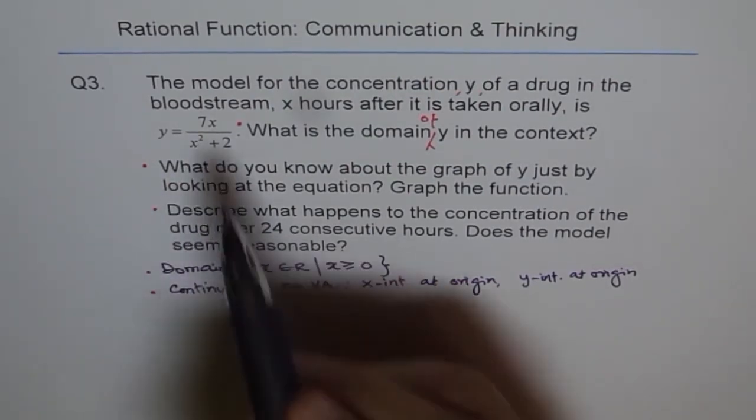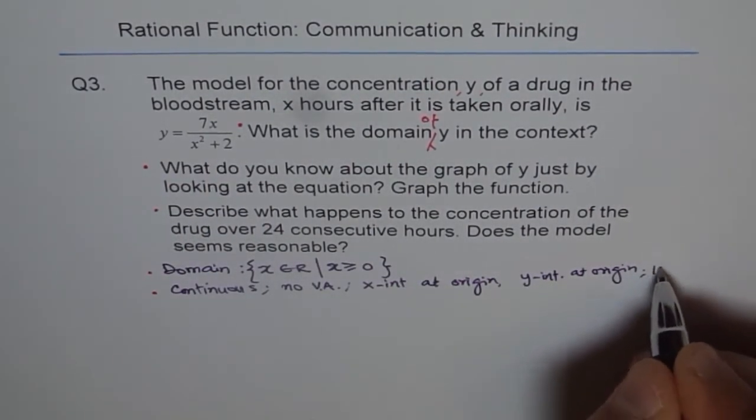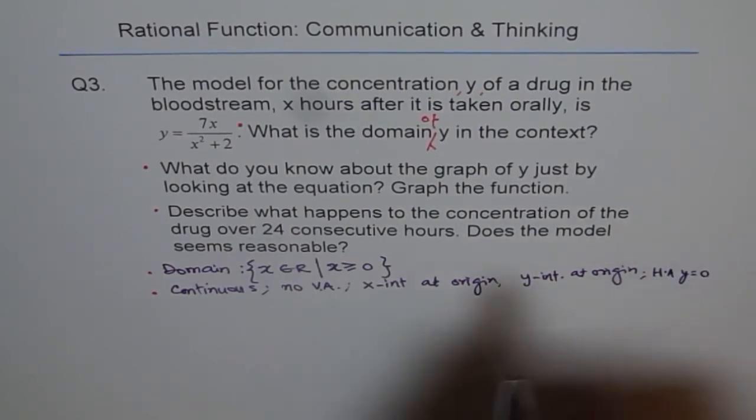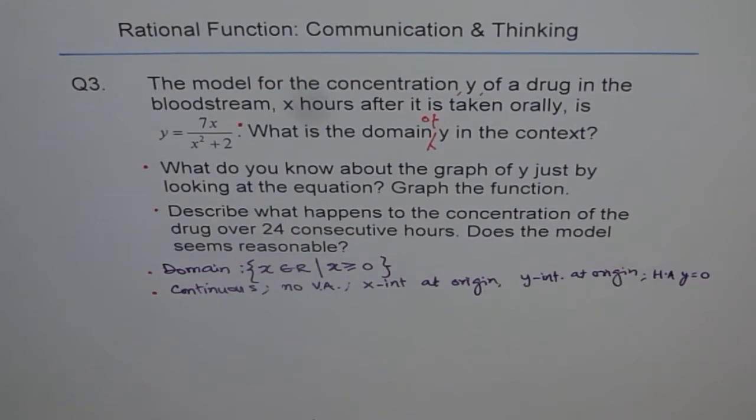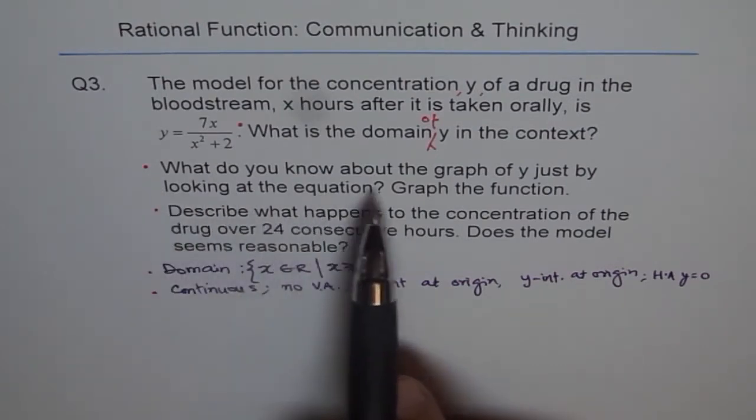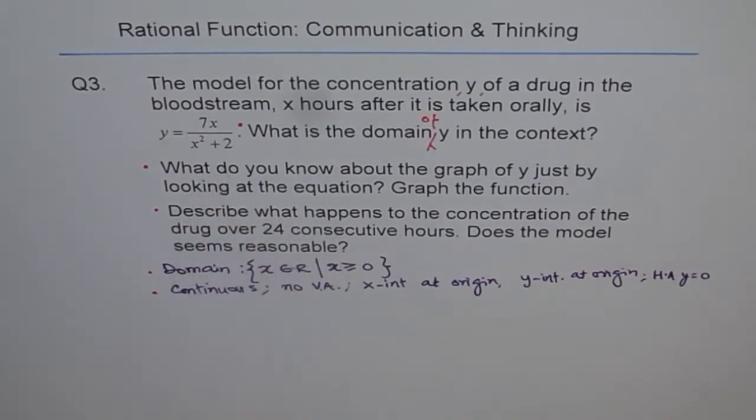Now, if x is very large, then horizontal asymptote is y equals to zero. If x is very large, then the degree of denominator is more than the degree of numerator. So as x approaches positive infinity, y approaches zero. So these are the characteristics which we see as we look into this equation. So that is the answer for what do you know about the graph of y just by looking at the equation. You've got x-intercept, y-intercept, and asymptotes you've described. That's more than enough.